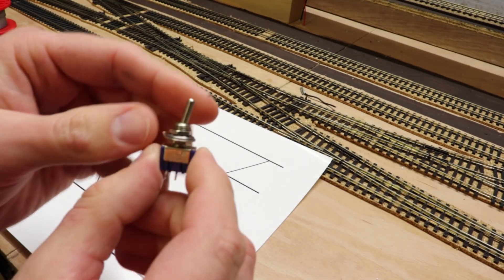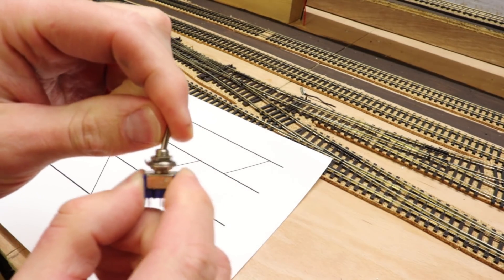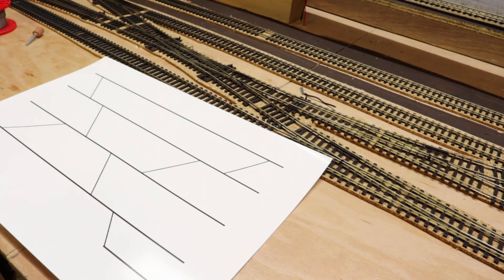I've got these toggle switches which control the points, so I need to make some holes in this. Now I have experimented and you just cannot drill through this, it rips up and just goes crazy. So what I've got is these little punch things.